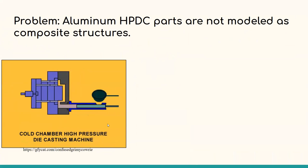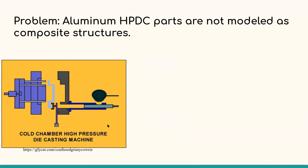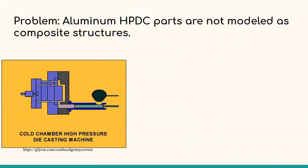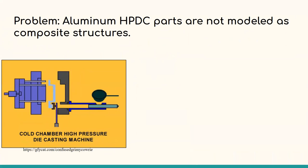In high-pressure die casting, molten aluminum is injected into a cooled mold. This allows intricate, near-net-shaped parts to be manufactured cheaply and quickly. In current modeling of high-pressure die cast parts, bulk material properties are used. However, the structure is more like a composite and should be modeled as such.